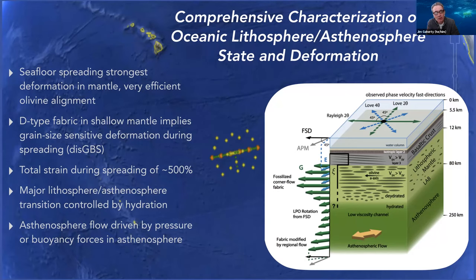A second new result: we've tried to bring together constraints to better understand the lithosphere-asthenosphere boundary. The characterization of attenuation structure, velocity structure, the depth of seafloor-spreading fabric versus asthenospheric fabric — all point to hydration and the dehydration boundary as a really important control on overall rheological behavior. We remain convinced that the hydration process is critical for controlling deformation in the mantle. We can't rule out melt-related processes, but our data suggests they may be secondary compared to hydration.